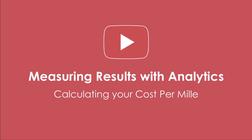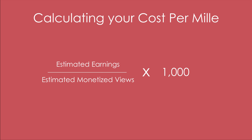There's an equation you can use to calculate your personal CPM, and that is your estimated earnings divided by your estimated monetized views, multiplied by 1,000. Those two stats — estimated earnings and estimated monetized views — are things we saw in the last video, which was about your earnings reports in your Google YouTube Analytics.